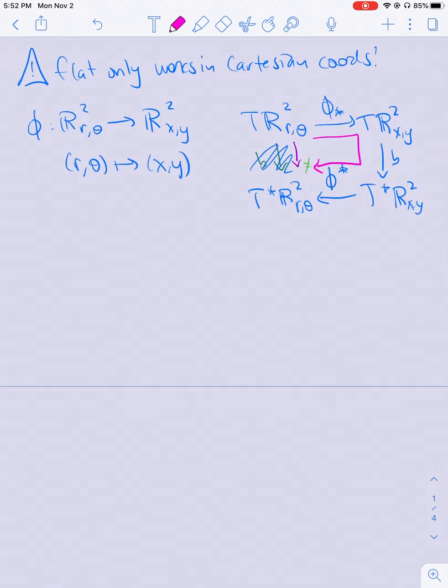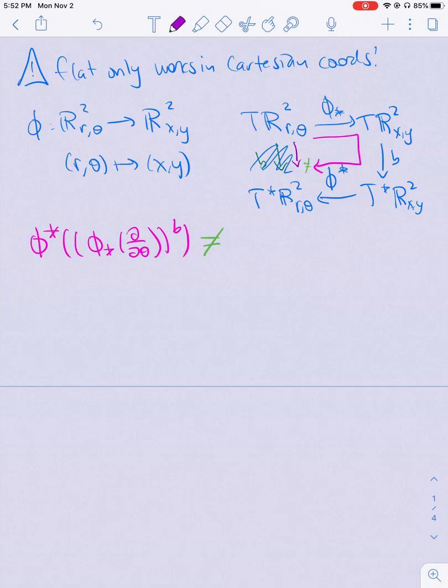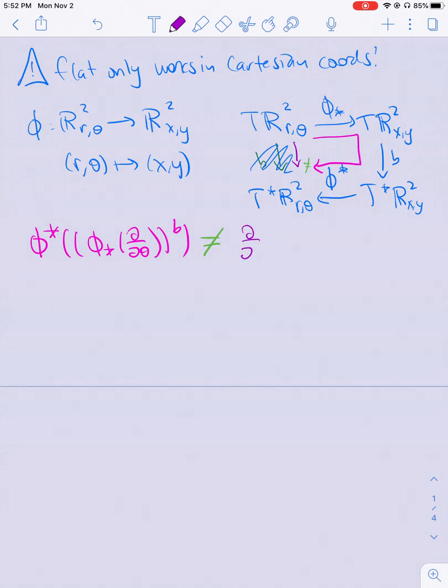So we're going to take ∂/∂θ. So what we wanted to show is that the pullback of the push forward of ∂/∂θ then flatted is not equal to the purple which would be ∂/∂θ flat.